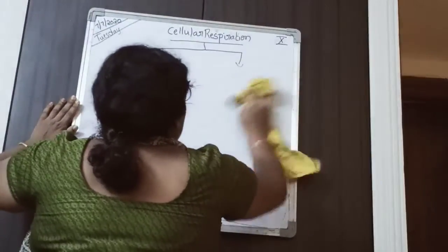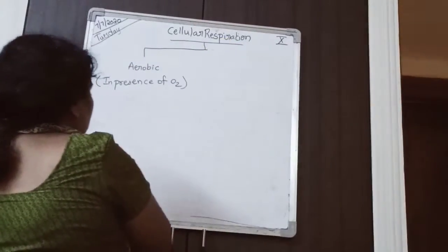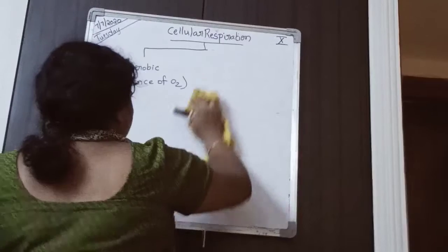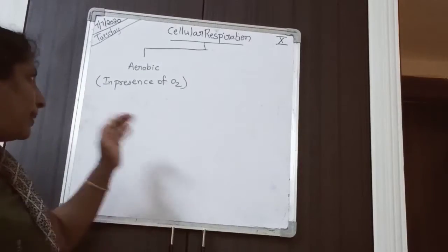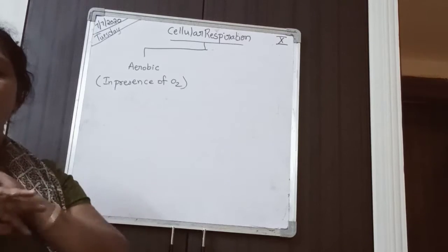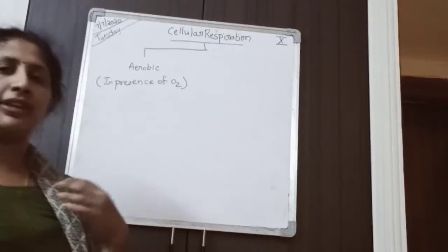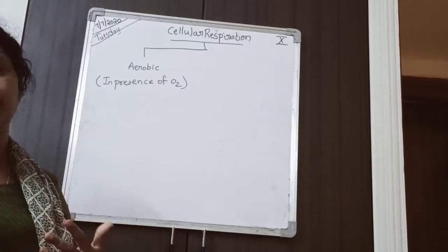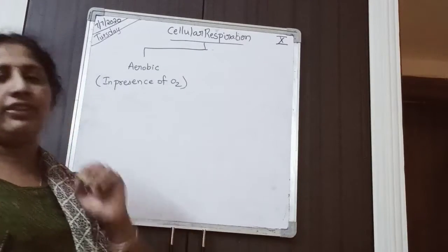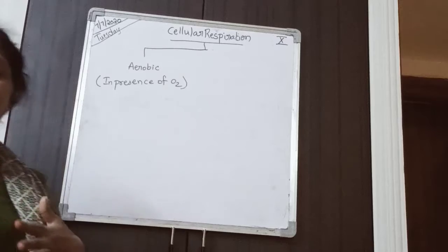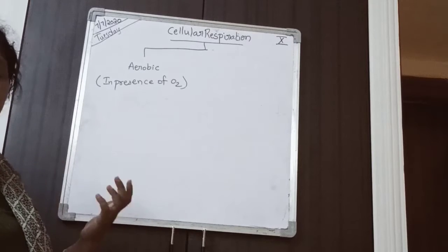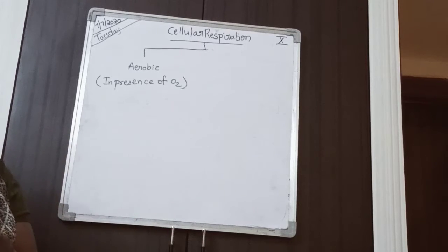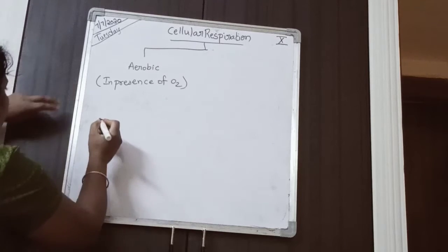Now let us talk about aerobic respiration. All the cells in the body, or in any organism, will try to prefer only aerobic respiration most of the time. Only when oxygen is not available, they will go for anaerobic respiration. Why do cells prefer aerobic respiration over anaerobic respiration?